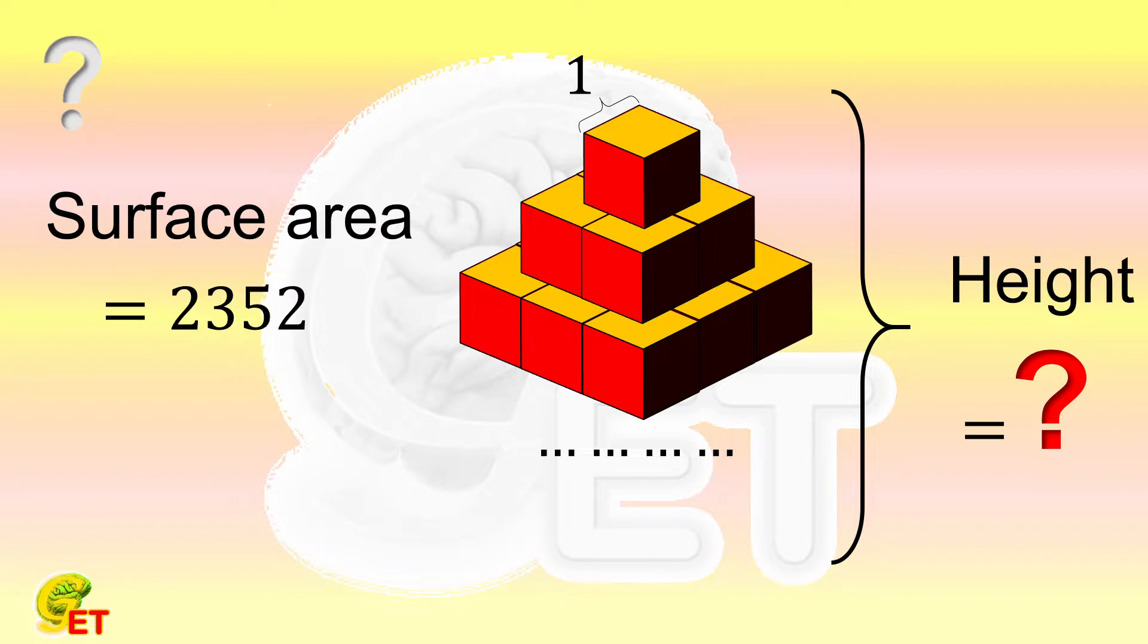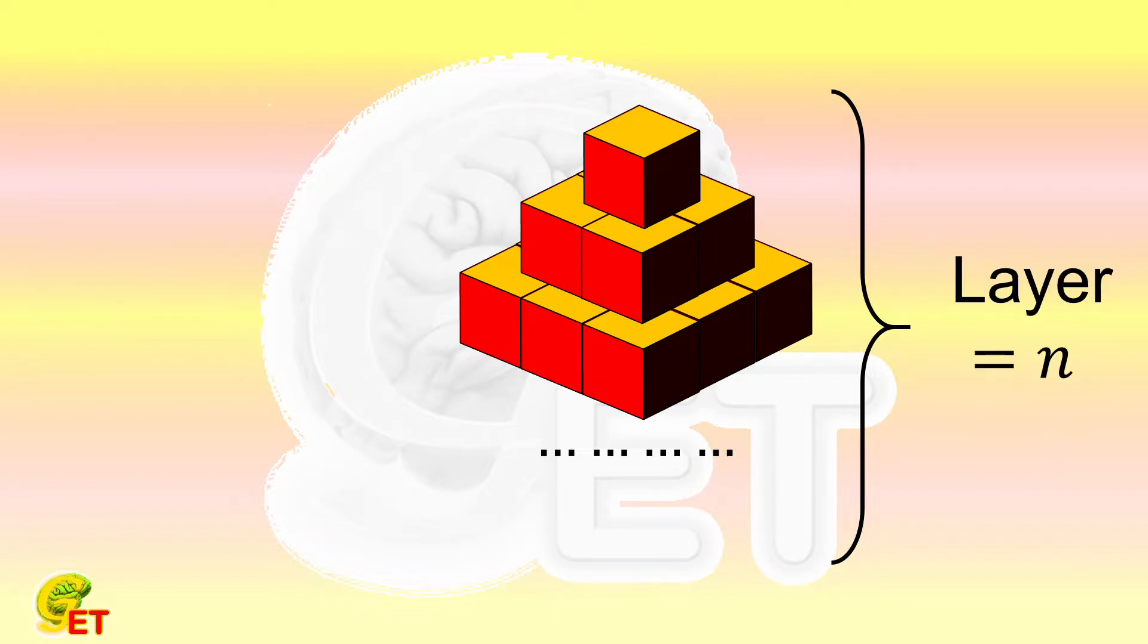Since the side length of the cube is 1, the height of the pyramid is equal to the number of its layers. The surface area of the pyramid is known, so it should be the thing that we start with.